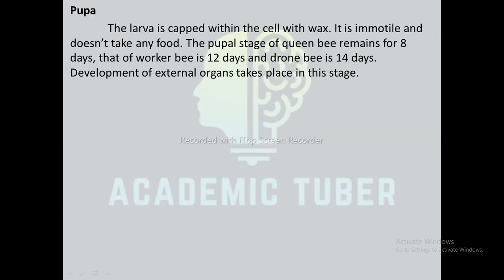Pupa is the third stage. The pupa is capped within the cell with wax. It is immobile and does not take any food. The pupa stage for the queen bee lasts eight days, for the worker bee it is twelve days, and for the drone bee it is fourteen days.